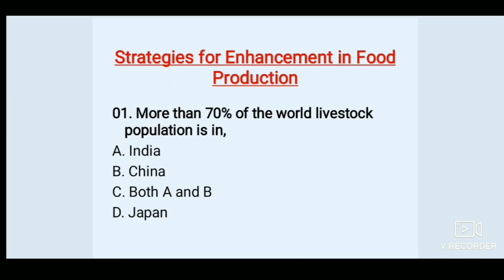More than 70% of the world livestock population is in — Options: A. India, B. China, C. Both A and B, D. Japan. Answer: C. Both A and B.